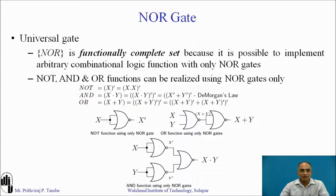For example, basic gates like NOT and OR functions can be realized using only NOR gates, so your circuit will only require NOR gates. The first expression is a NOT expression, x̄.